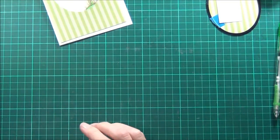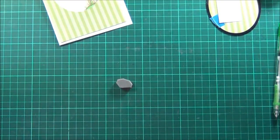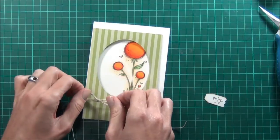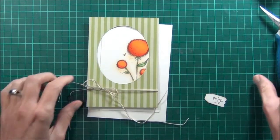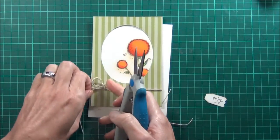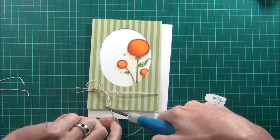So I'm going to use the sentiment from the Doodle Flower Sentiment Set, and this one says enjoy. So I've just tied two lots of hemp twine together to create a bow, and then I'll attach this to the front of my card.